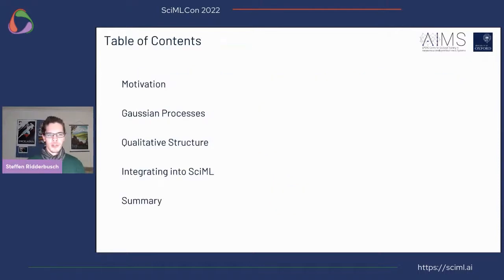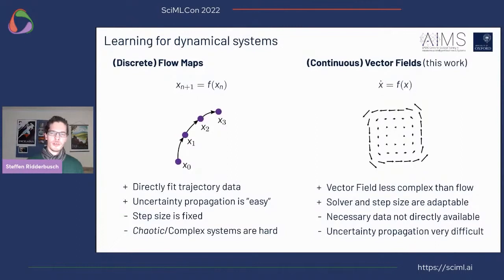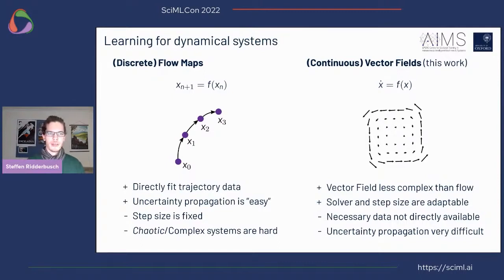Let's start by talking about the motivation. I'm not going to talk all too much about this because for most listeners here who are familiar with the SciML ecosystem, a lot of this is potentially well-known. If you look at the literature, you will find that a lot of Gaussian process machine learning papers for dynamic systems are learning the discrete flow maps — a function that, if you give it a state, gets you the state after a certain fixed time step.